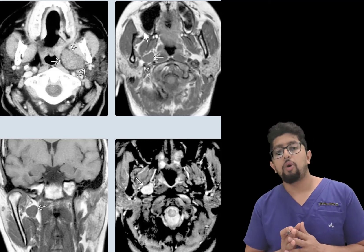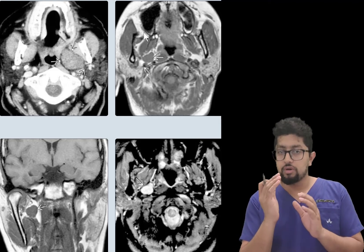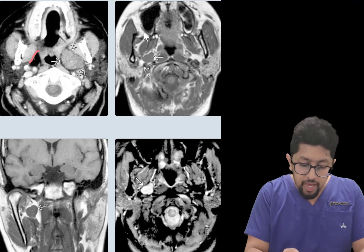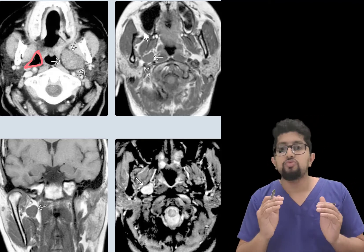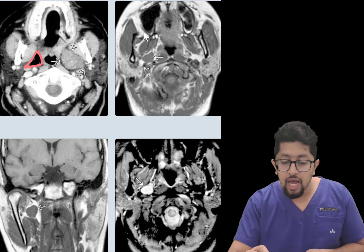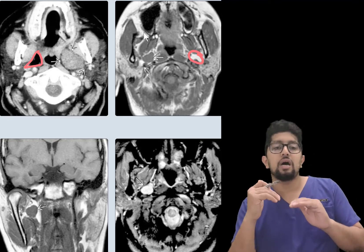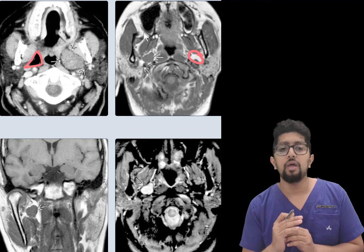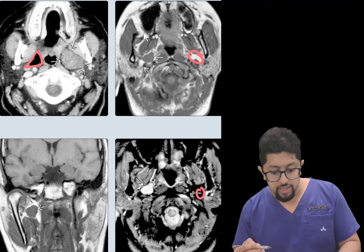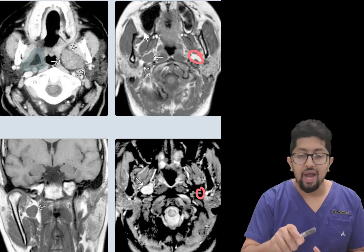So till now we have discussed about different neck spaces. Today we are going to discuss one of the important lesions in the parapharyngeal space. In this image, the parapharyngeal space is the hypodense area on CT, which is fat. This fat appears hyperintense on T1-weighted MRI, hyperintense to isointense on T2-weighted MRI, and hypointense on fat-saturated T2-weighted MRI where the fat is suppressed.